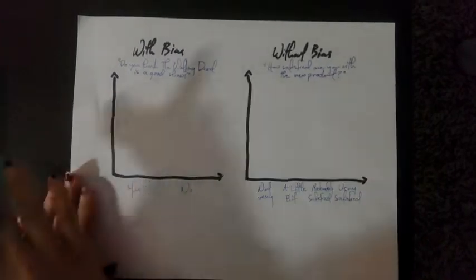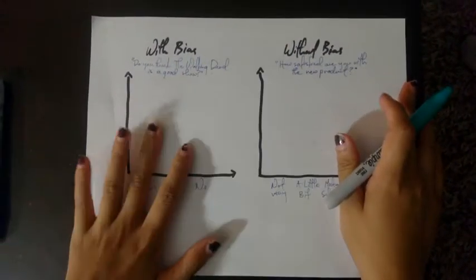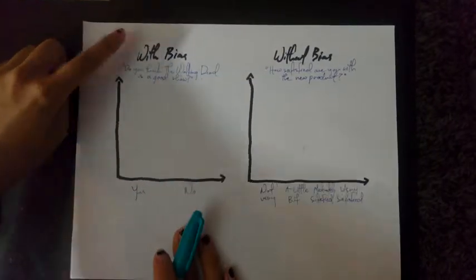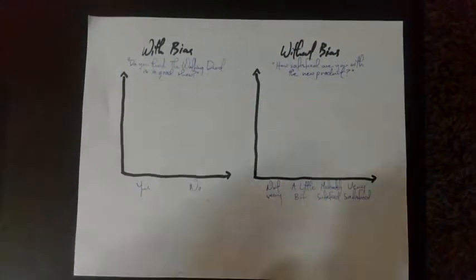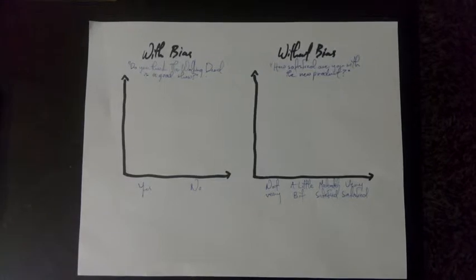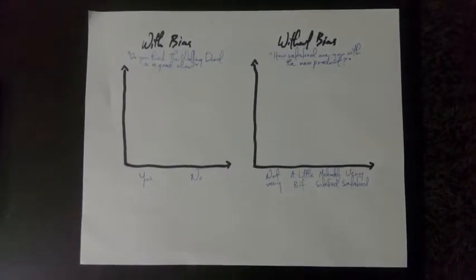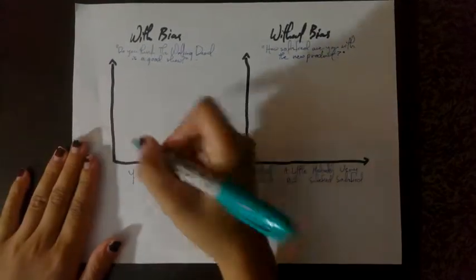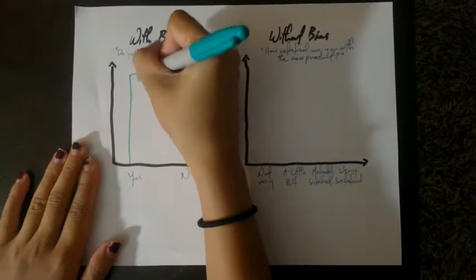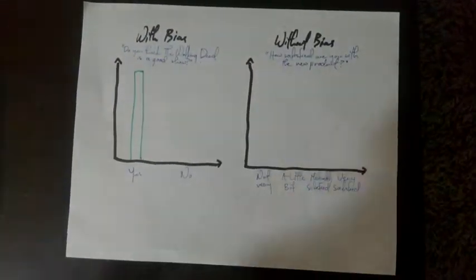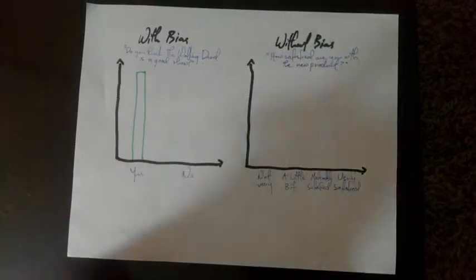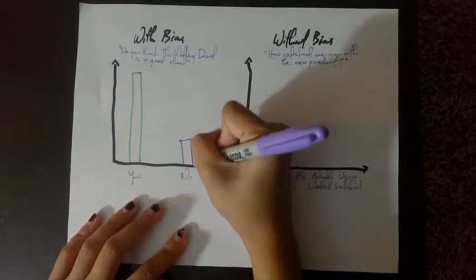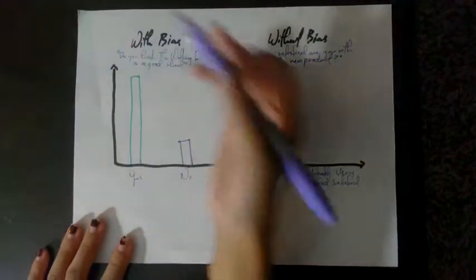I'm going to show you another example of bias with bar graphs. For this one, it's an example with bias. The question would be: Do you think The Walking Dead is a good show? The person collecting the data might have used self-selection or exclusion to get the data that he wanted. So he'd maybe ask his friends that obviously enjoy the show to get a bar graph that might look something like this.